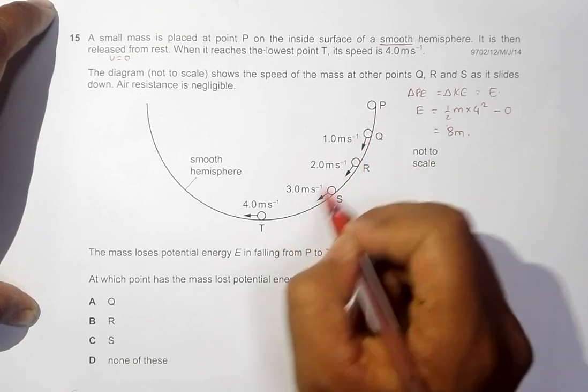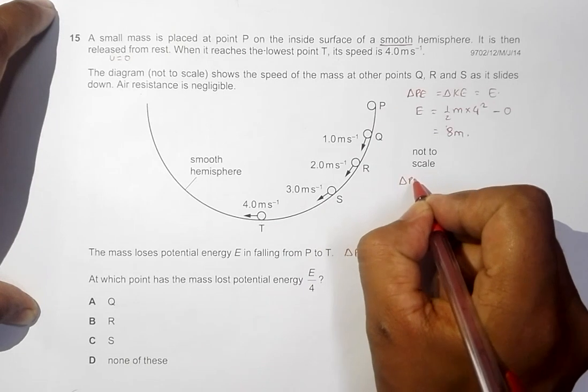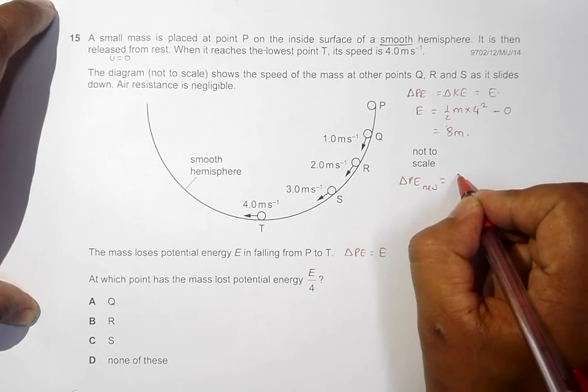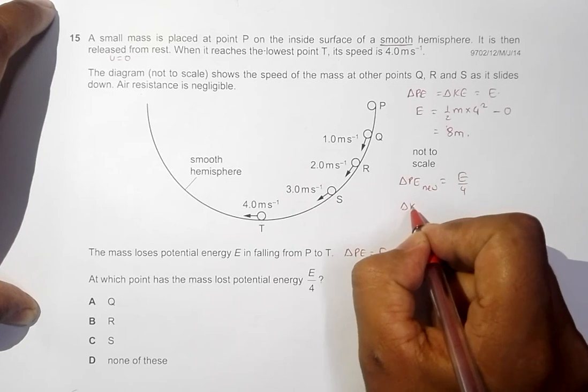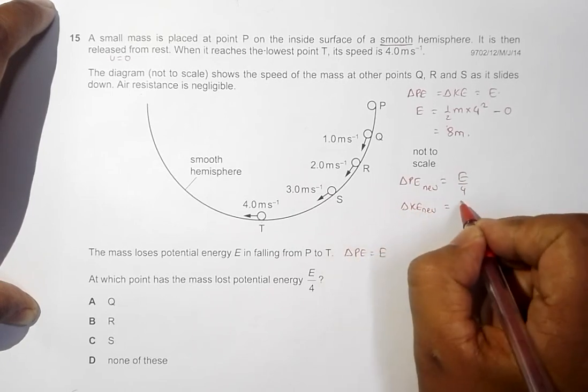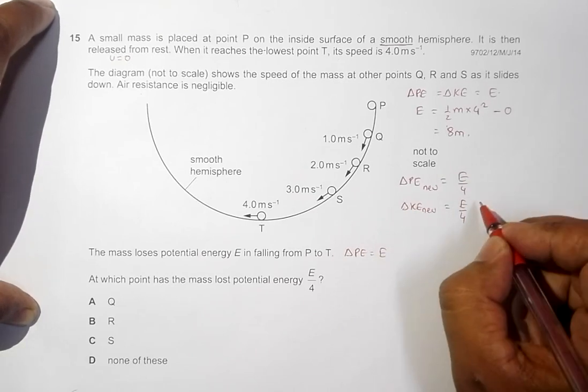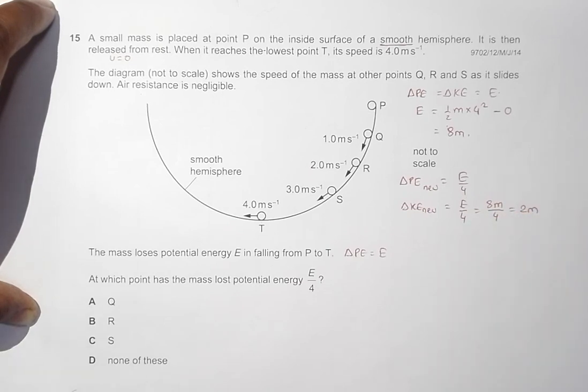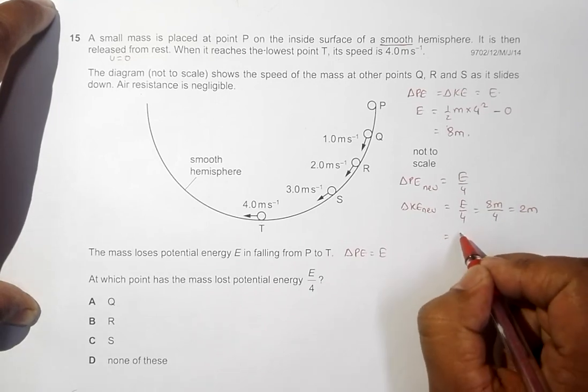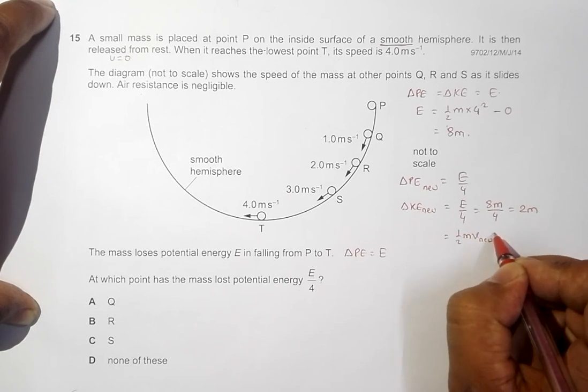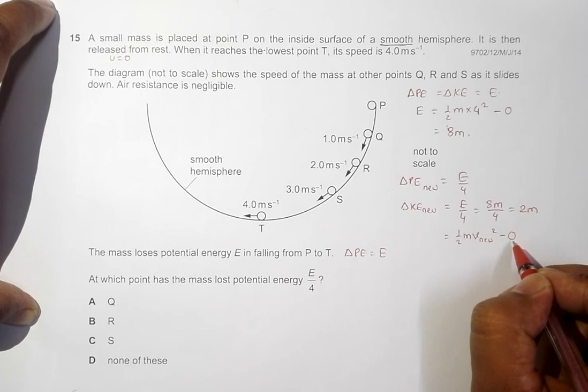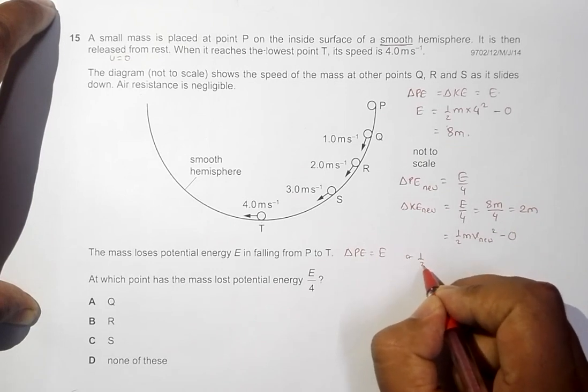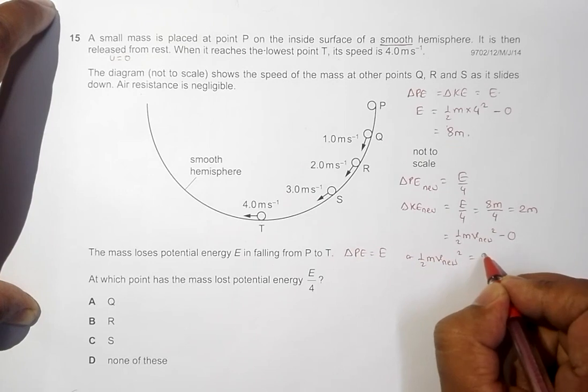Now we have a certain point where the loss of PE, let us say this is delta PE new, is equal to E/4. So delta PE new equals E/4, which equals 8M/4, equal to 2M. And it's also equal to 1/2 M V new squared minus 0, where 0 is the KE at the initial point. When I equate these things, 1/2 M V new squared should equal 2M.